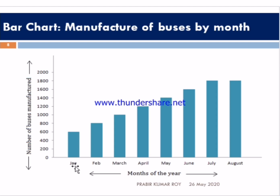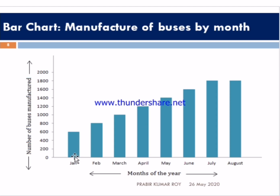You will describe, first, in January how many buses were manufactured, then February, March, April, and all the months in that way. Last of all, you will summarize by stating that in July the manufacture of buses was the highest, and in January it was the lowest.